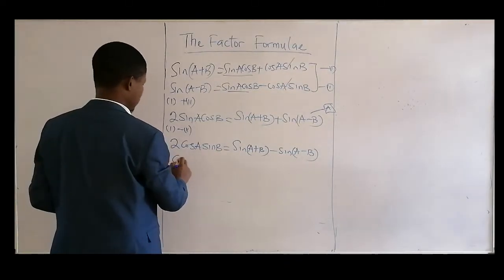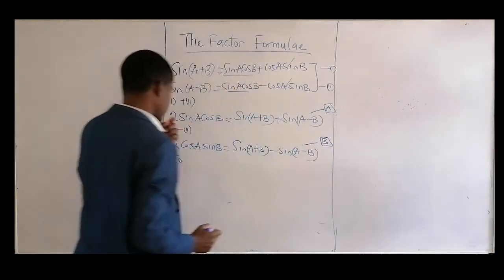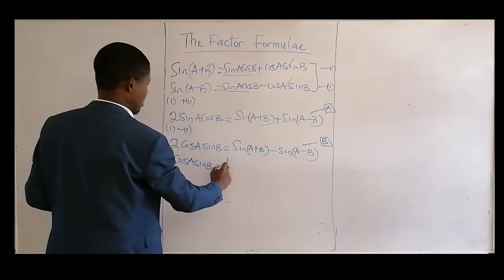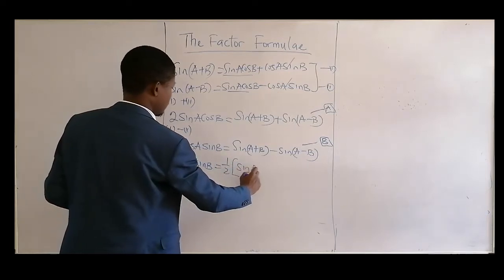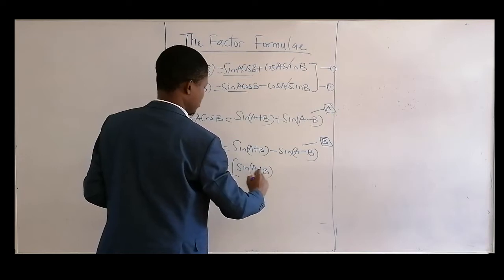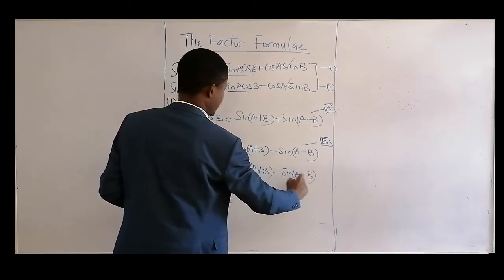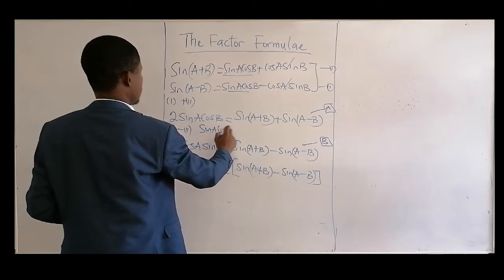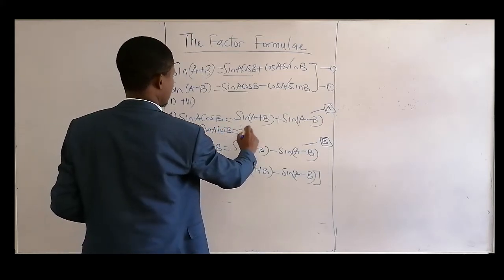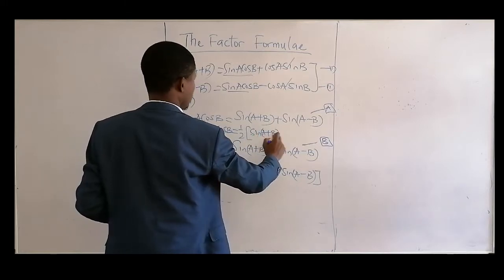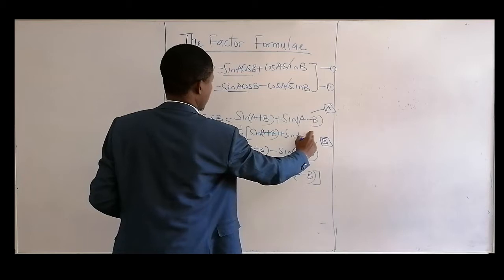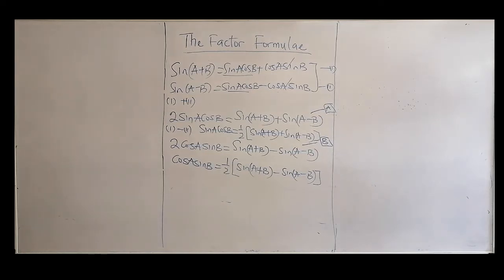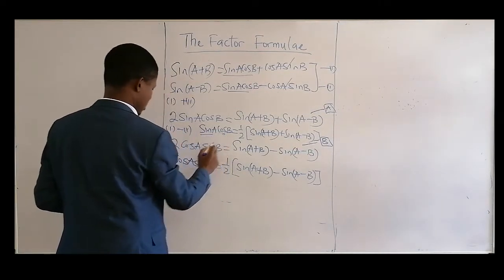Now divide by two. We get cos A sine B equals one half of sine(A + B) minus sine(A − B). Call this equation B. So this one is the product of sine and cosine, and equation B is the product of cosine and sine.